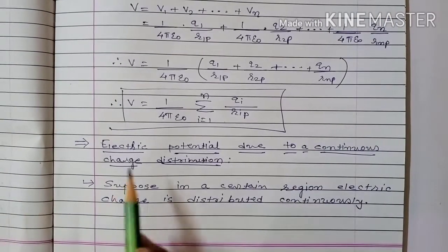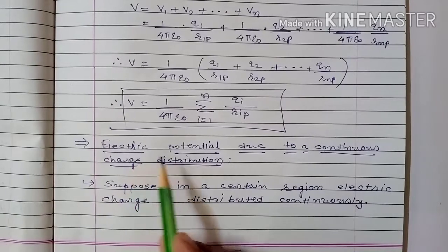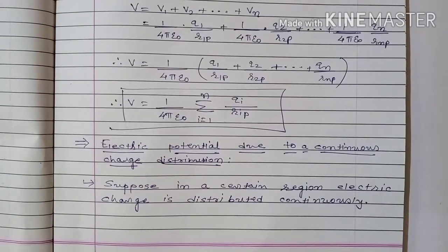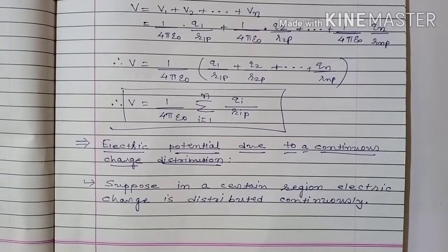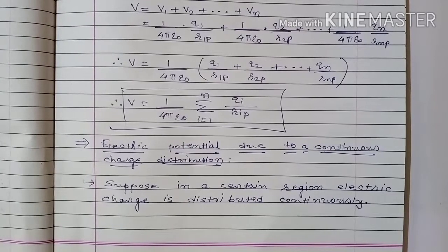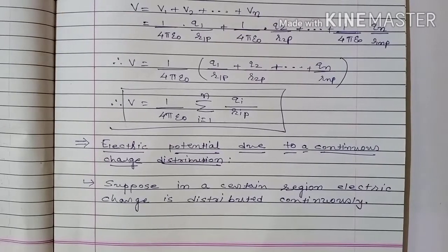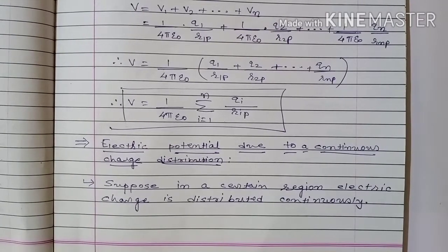Now we will find electric potential due to continuous charge distribution. For continuous charge distribution — whether it is line charge distribution, surface charge distribution, or volume charge distribution — the method remains the same.